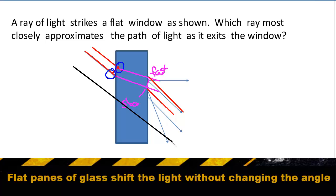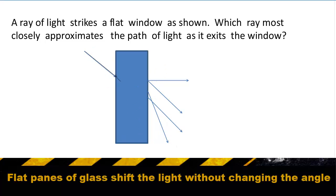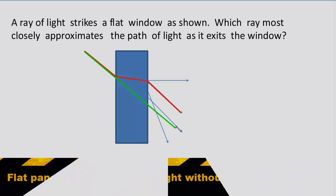So this time the image turns down as it exits. If the angles are drawn correctly, both the entrance and exit angles should be the same — the image simply shifts slightly because it turns up as it enters and then down as it exits. Redrawing this more cleanly, we see the light bends up as it enters and down as it exits, maintaining an angle that is parallel to its original trajectory.